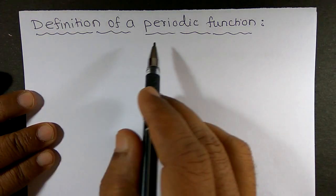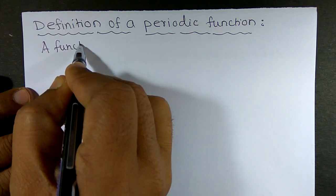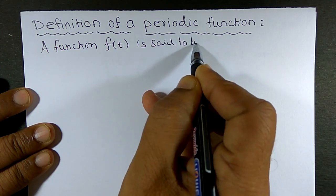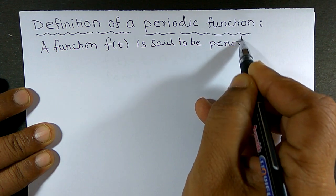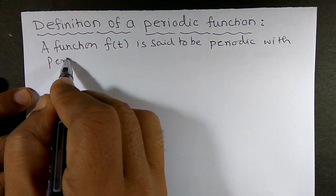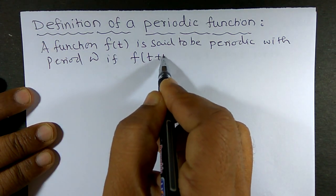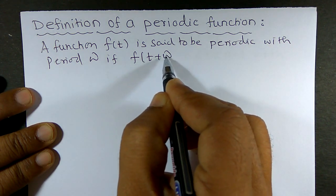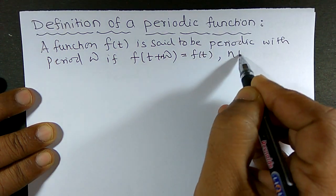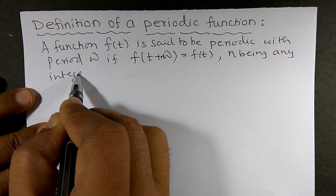Hello friends. Now I want to define a periodic function. A function f of t is said to be periodic with period omega, if f(t + nω) equals f(t), where n is any integer.